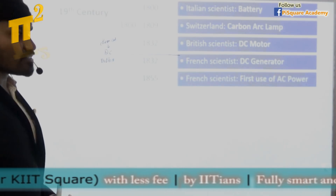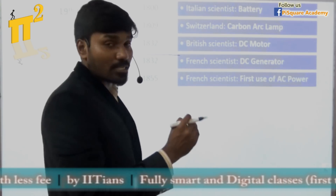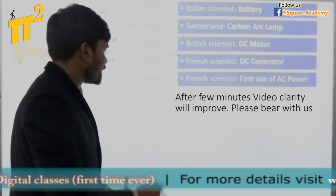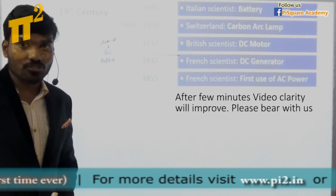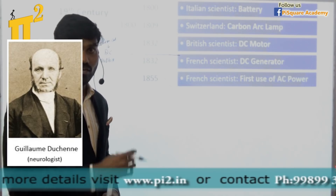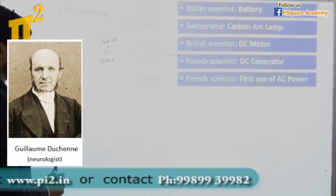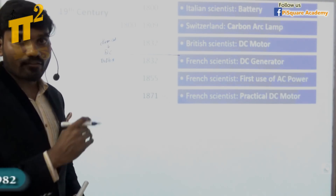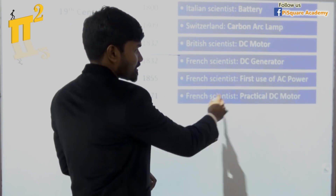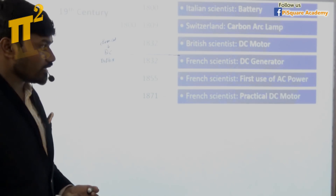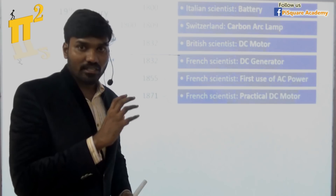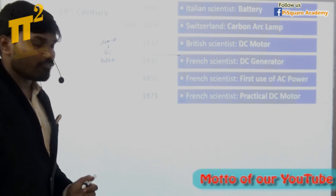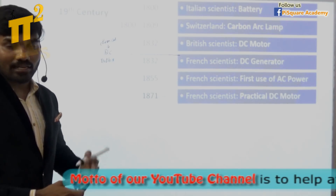In 1855, a French neurologist used AC power for electrotherapy — that was the first application of AC power. Before 1855 there was no application of AC. Moving on, in 1871, a French scientist named Gramme practically developed a DC motor design that could be used in the real world. He changed the rotor and armature structure — called the Gramme ring armature or Gramme ring winding — and with that he could efficiently drive a motor using electrical input.